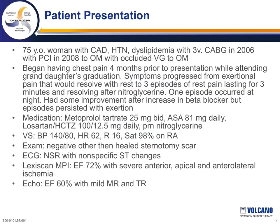I'd like to present a challenging case in which intravascular ultrasound was critical to decision-making. The patient is a 75-year-old female with known coronary artery disease who had three-vessel bypass surgery in 2006, with hypertension and dyslipidemia. She had a previous coronary intervention in 2008 to an obtuse marginal branch with a known occluded vein graft to that branch. She began having chest pain about four months prior to presentation, progressing from exertional pain to three episodes at rest, each lasting about three minutes and resolving after sublingual nitroglycerin, with one episode waking her from sleep. She was on beta blocker, aspirin, losartan-hydrochlorothiazide, and PRN nitroglycerin.